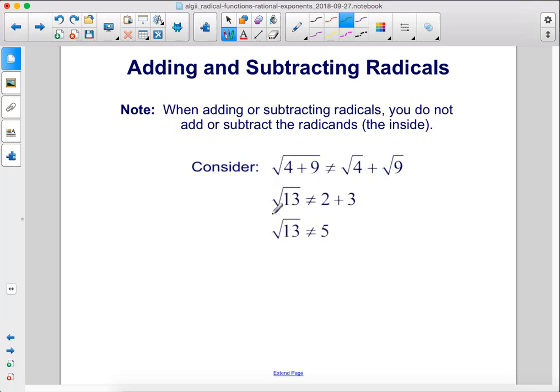So the square root of 4 plus 9 is the square root of 13. It's not the square root of 4 plus the square root of 9. This would be 2, this would be 3, so the square root of 13 is not equal to 5.